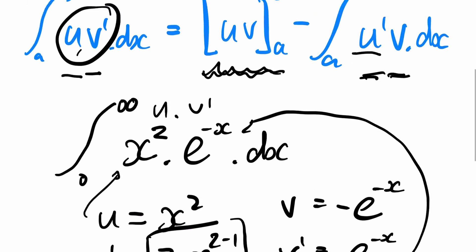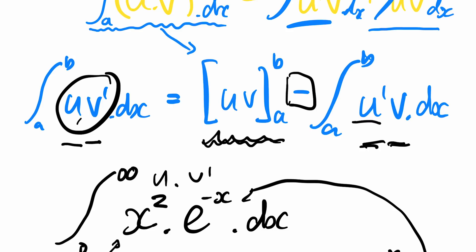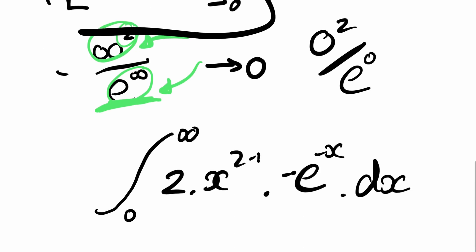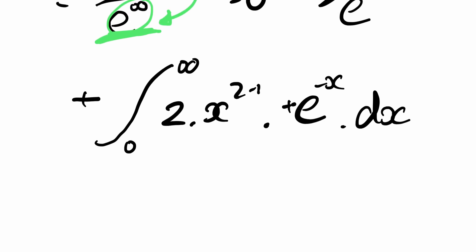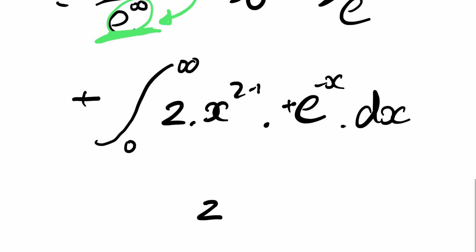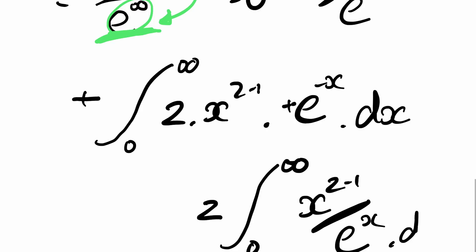And actually if we look up here, our original thing, we've got this negative there. So we've got to pop that out the front. But thankfully that negative there and that one there kind of go away. And that z is a constant. So we can put that z out the front. We're doing integration from zero to infinity. We've now got x to the z minus one divided by e to the x dx.